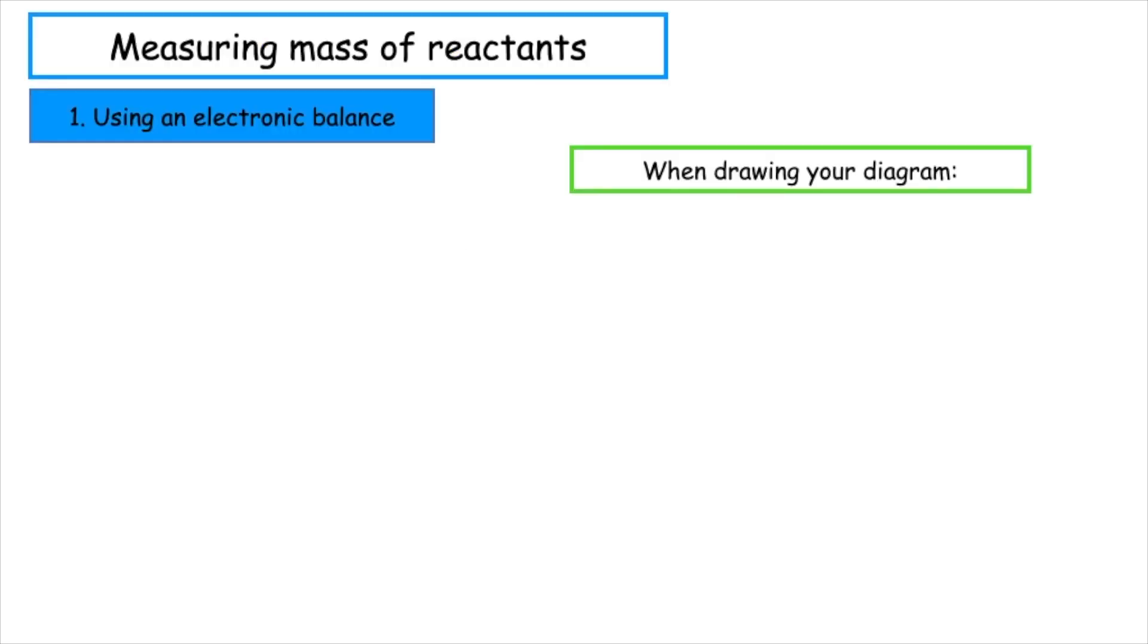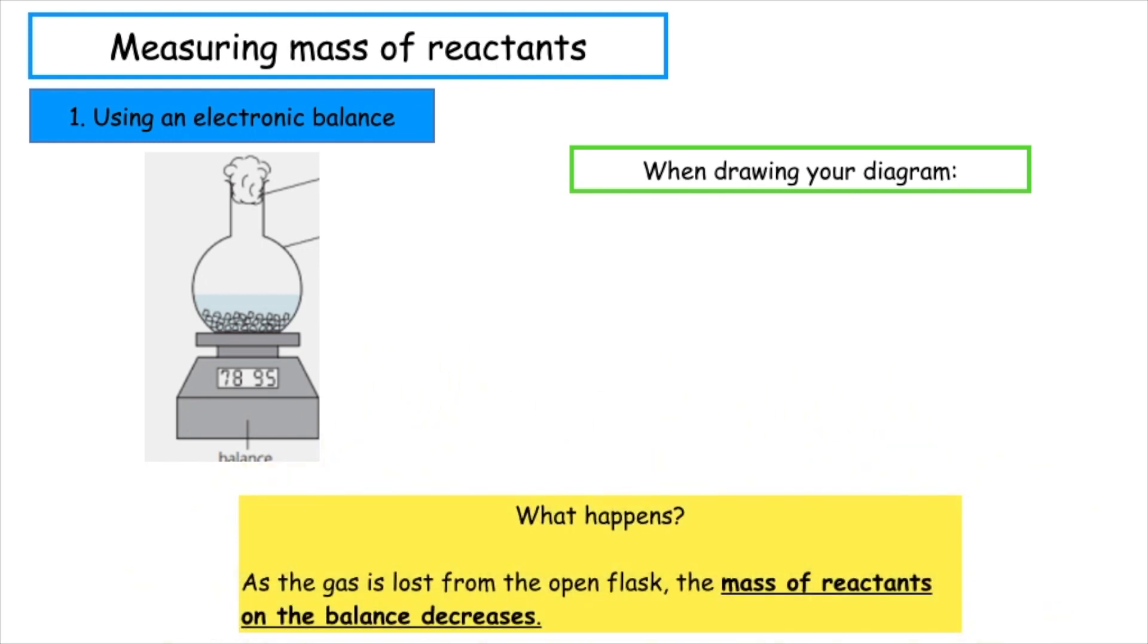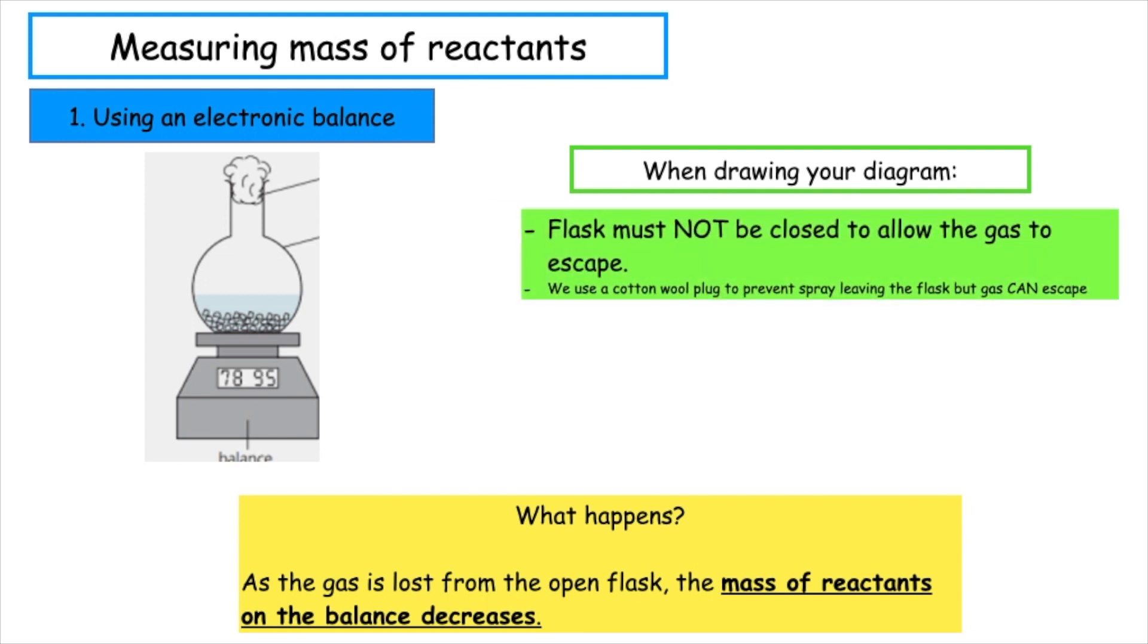To measure the mass of reactants we use an electronic balance. So what actually happens during the experiment? As the gas is lost from the open flask, the mass of reactants on the balance decreases. When drawing your diagram, the flask must be open so that the gas can escape. We use a cotton wool plug to prevent spray leaving the flask, but the gas can escape through that. We must also have a digital scale and it's always measured in grams.